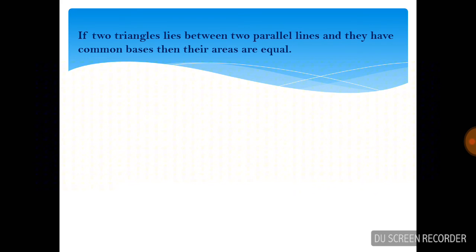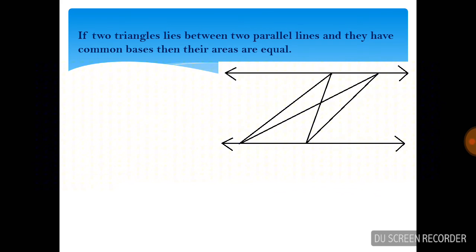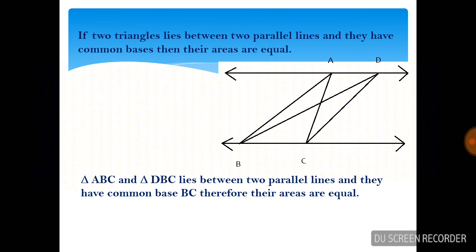The second property: if two triangles lie between two parallel lines and they have a common base, then their areas are equal. There are two triangles lying between two parallel lines — triangle ABC and triangle DBC. Triangle ABC and triangle DBC lie between two parallel lines and they have common base BC. Therefore their areas are equal, because these two triangles have both their heights and bases equal.